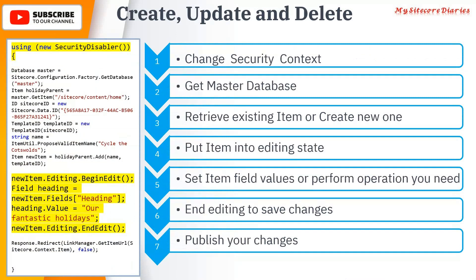The first step is to change the security context. Whenever a Sitecore request comes in, it runs in the user context — whatever user is logged in. If there is no login, it will be the anonymous user. That user may not have permission to update any item in Sitecore. So we have to change the security context, which can be done two ways: using a Security Disabler or a User Switcher. That is step one — using new SecurityDisabler() to change the security context.